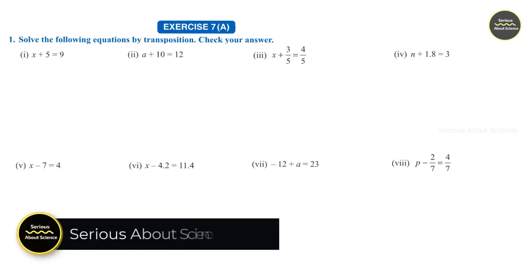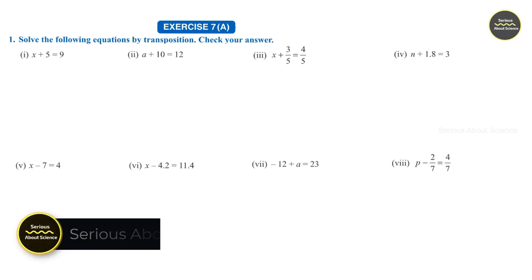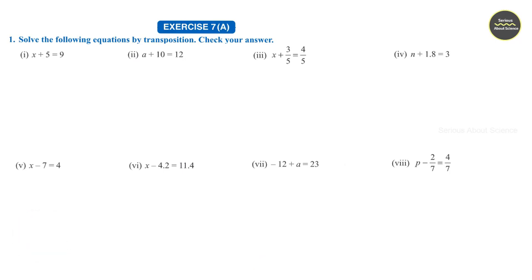Exercise 7a, Section 1. Solve the following equations by transposition. Check your answer. Question number 1: h plus 5 is equal to 9.